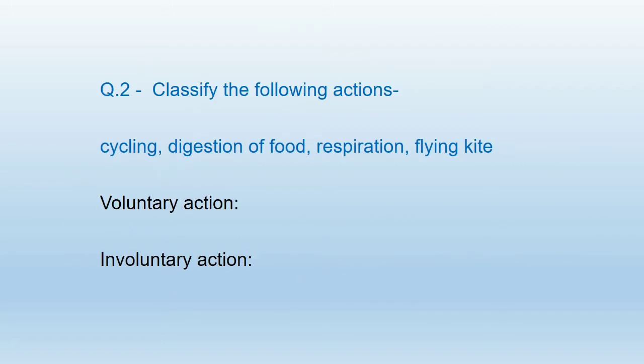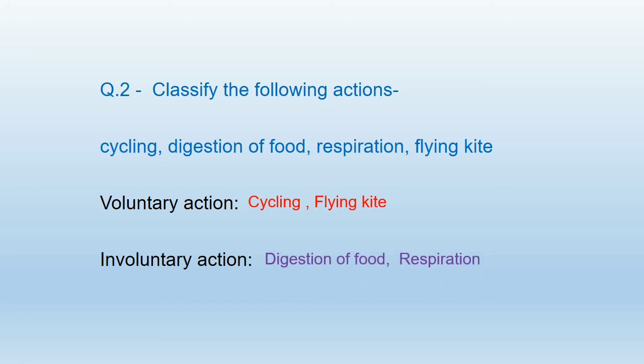Question number 2: Classify the following actions — cycling, digestion of food, respiration, flying a kite — into voluntary actions and involuntary actions. Voluntary actions are cycling and flying a kite. Involuntary actions are digestion of food and respiration.